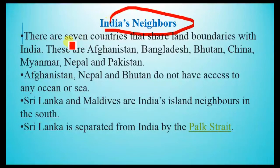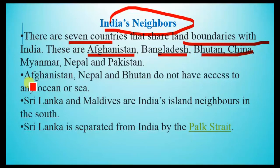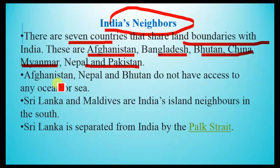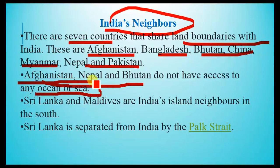India's neighbors — there are seven countries that share boundaries with India: Afghanistan, Bangladesh, Bhutan, China, Myanmar, Nepal, and Pakistan. Among them, Afghanistan, Nepal, and Bhutan do not have access to any ocean or sea; they are landlocked and are not surrounded by any water body.